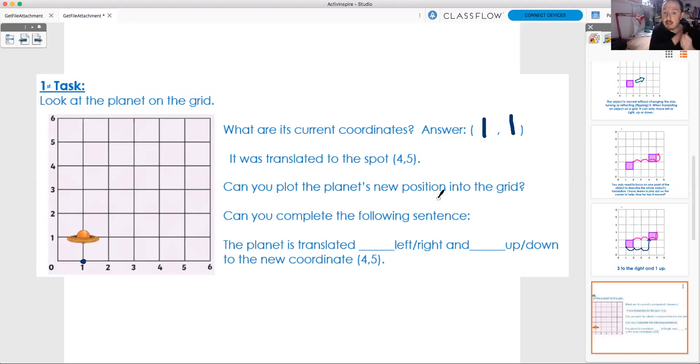Now, it says here, the question says, it was translated to the spot four, five. So, it's asking you, can you plot the planet's new position into the grid? Well, I guess I could draw a little planet on the grid, or I could do it just a dot or an x, just to make it a bit easier. So, four, five. This is the x-axis, four, and the y-axis, five. Let's have a look. One, two, three, four, on the x-axis. Four to the right, let's go five up. One, two, three, four, and five. And it would be just there. So, it's moved from one, one, just here, all the way to four, five.